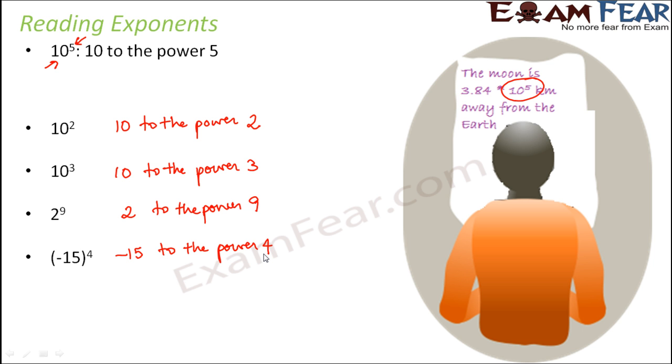Now, are there any alternate ways also of reading the exponents? Yes, there are. So let us look at some alternate ways. So 10 to the power 2 can also be read as 10 squared. Why? Because you have two 10s. So we say 10 squared.